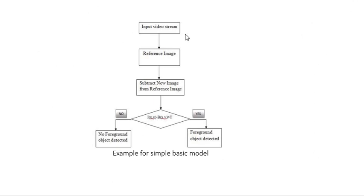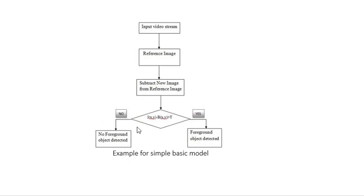Here is a simple example for the basic model. We take a video stream as input, then fix the reference image. We subtract the new image from the reference image — where new images are frames subsequent to the first frame, which serves as the reference image. After subtracting the new image and reference image, if the difference is greater than the threshold, we consider it a foreground object; otherwise, it is considered background.